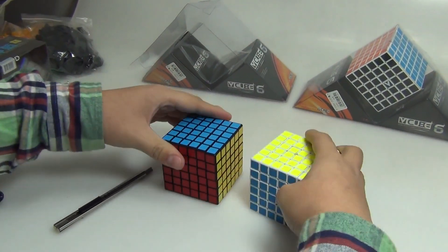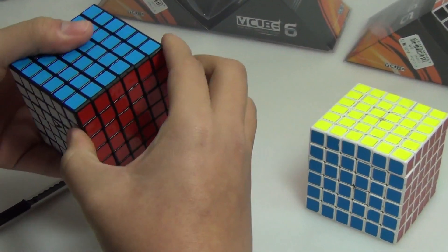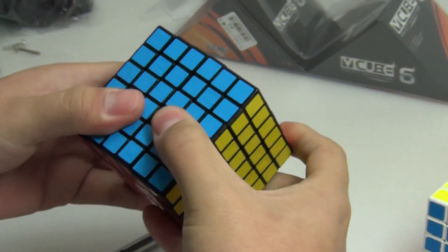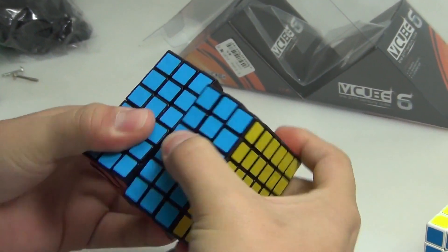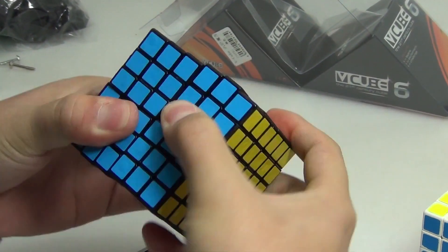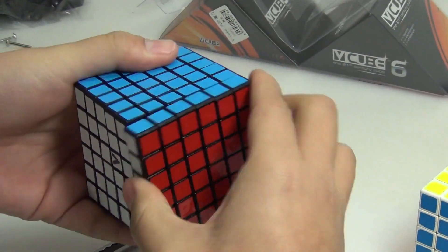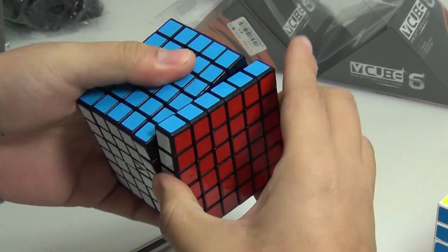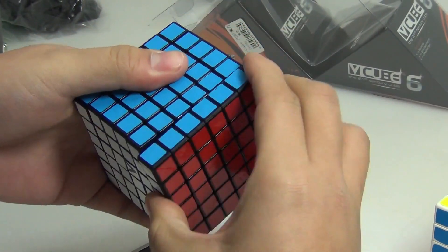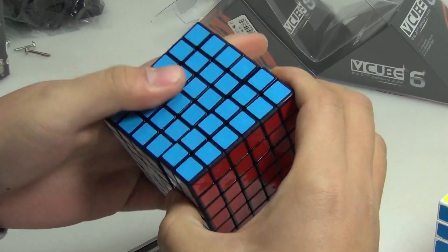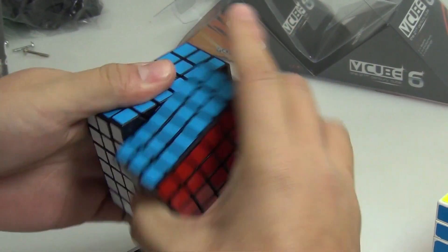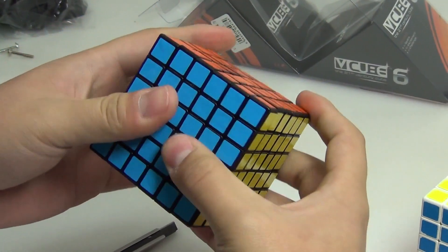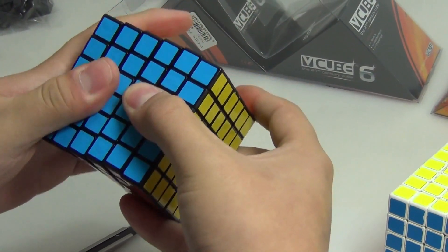As we all know, this V-Cube 6x6 is locked. The V-Cube 6 has clicks everywhere, no matter the outside layer, second layer, or the middle layer, and there is the possibility this cube may lock.